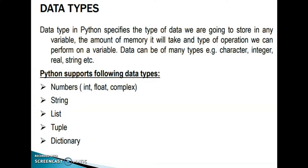Data type in Python specifies the type of data we are going to store in any variable, the amount of memory it will take, and the type of operation we can perform on a variable. Data can be of many types: character, integer, real, string, etc. Python supports the following data types: numbers, strings, list, tuple, dictionary.